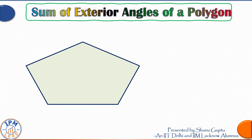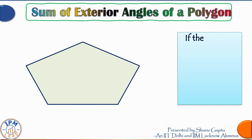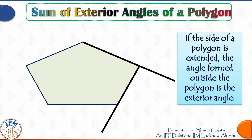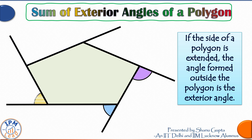Moving on, let's discuss exterior angles of a polygon. If the side of a polygon is extended, the angle formed outside the polygon is called an exterior angle. Suppose we are moving in the clockwise direction: first this side gets extended, next this side, then this one, then this one, and finally this one. The colored angles between the sides formed on the outside of the figure are exterior angles. Now let's look at how these lines and angles merge into one point and what the relationship between these angles is.